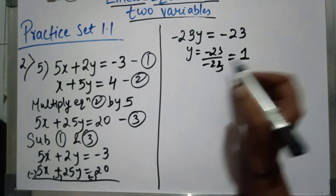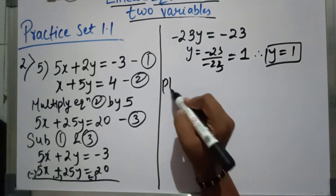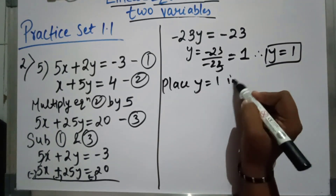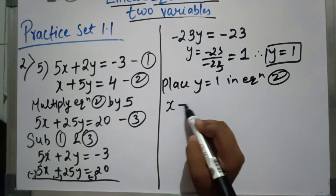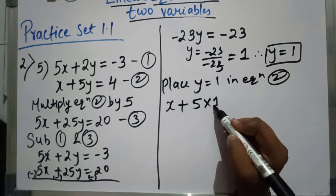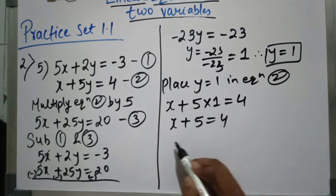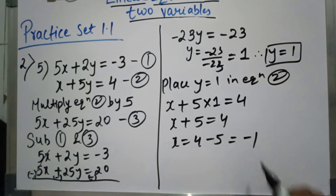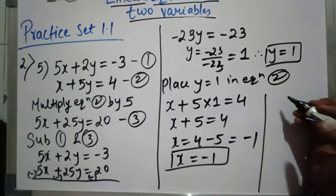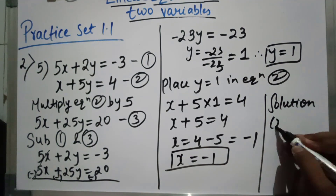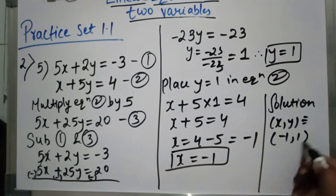Now y equal to 1. Place y equal to 1 in equation 2: x plus 5 into 1 equal to 4, so x plus 5 equal to 4, therefore x equal to 4 minus 5, which is minus 1. So the solution is: x, y equal to minus 1, 1.